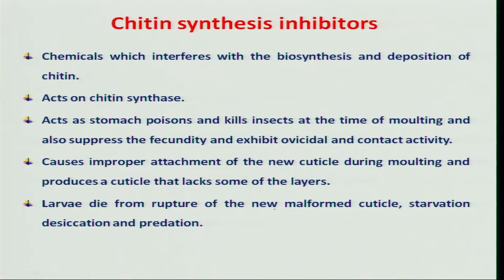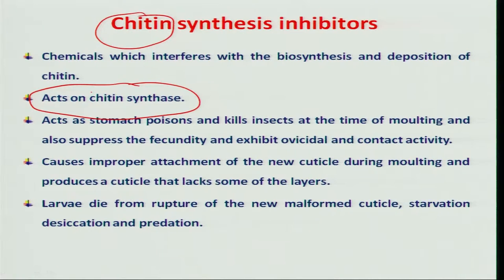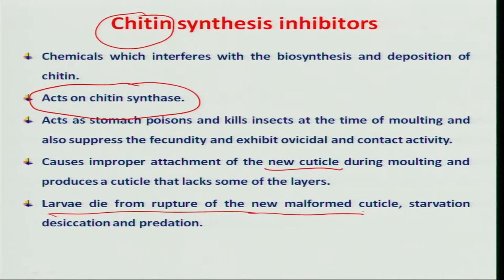Insect growth regulators also inhibit the synthesis of chitin. Chitin is one of the important constituents of the insect which gives protection in many ways. IGRs act on the chitin synthase enzyme, and most act on the cuticle — especially the chitin layer — causing rupture and malformation of the insect, so the insect cannot reach the further developmental stage and dies.